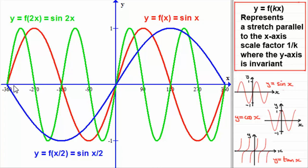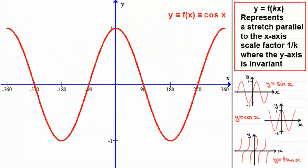That gives you an idea of how the transformation y equals f of kx works. Now we're going to look at the graph of y equals cos x, and I'll leave you with a few sketches to draw. Here we have the graph of y equals cos x, with f of x being cos x. It goes from minus 1 to 1 and crosses the x-axis at minus 270, minus 90, 90 degrees, and 270 degrees.